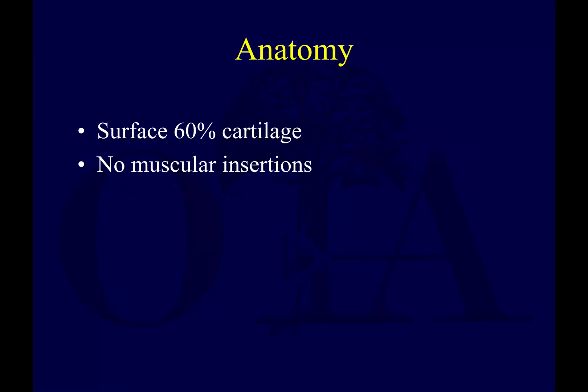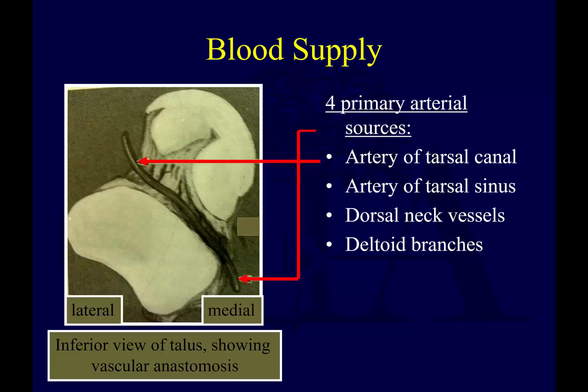It's important to understand the anatomy. The talus is a bone covered in 60% of its surface by cartilage, making it an unusual bone in that regard. It has no muscular insertions. The blood supply is important to understand — there are four primary arterial sources: mainly the artery of the tarsal canal, the artery of the tarsal sinus, talar neck vessels, and deltoid branches.